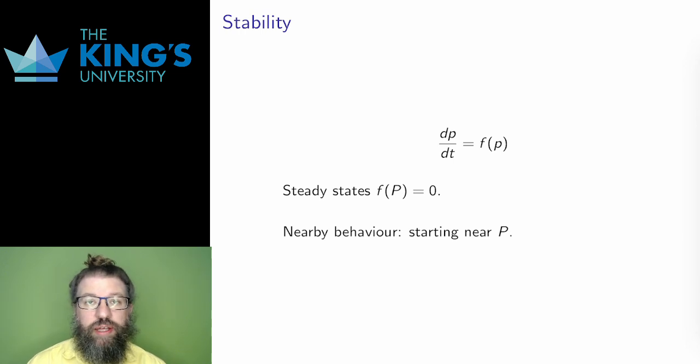This video follows from the phase line construction in the previous video. In qualitative analysis, the goal is often to describe a reasonable narrative. A lot of that narrative relates to stability. And be careful here, it's really easy to mix the words steady and stable. They're not the same here.